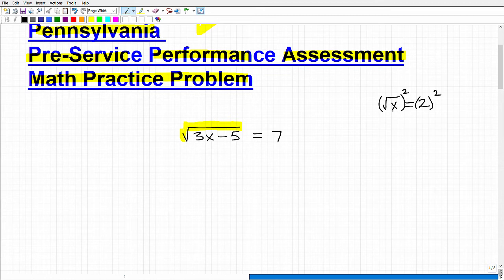So the square root of x squared is simply x. Let me write that a little bit better. And then of course, 2 squared is 2 times 2 or 4. So x is equal to 4.